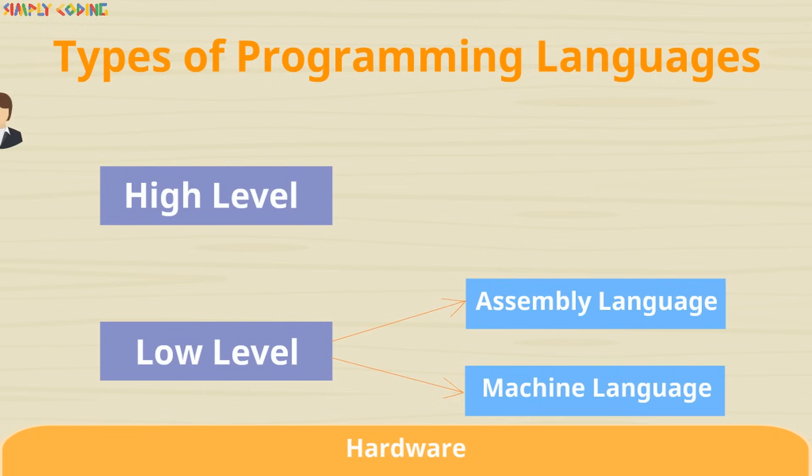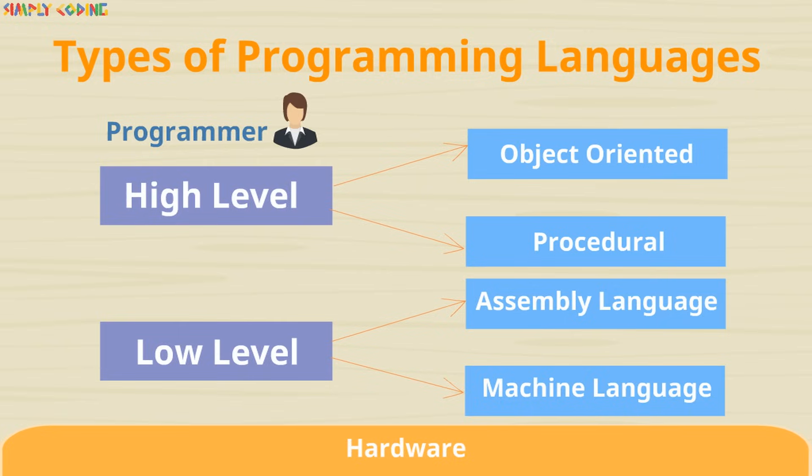High level languages are more user friendly and closer to human language. They are of two types, procedural and object oriented. Let's learn more about each of them.